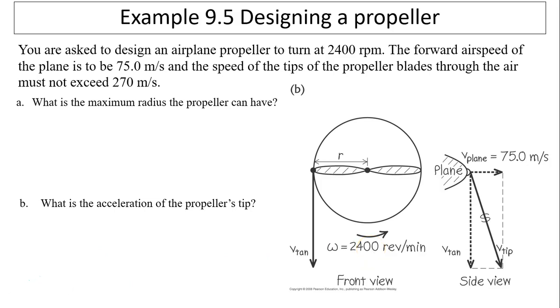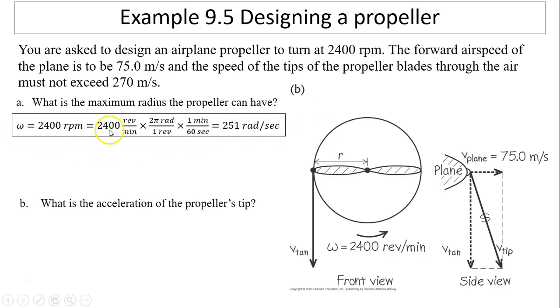Let's take a look at another example. You are asked to design an airplane propeller to turn at 2400 revolutions per minute. The forward airspeed of the plane is to be 75 meters per second, and the speed of the tips of the propeller blades through the air must not exceed 270 meters per second. That's a maximum. What is the maximum radius of the propeller can have? To solve this, first we have to convert omega into radians per second. Omega in rad/s: use revolution per minute times 2π radians per revolution, and each minute is 60 seconds. So omega equals 251 radians per second.